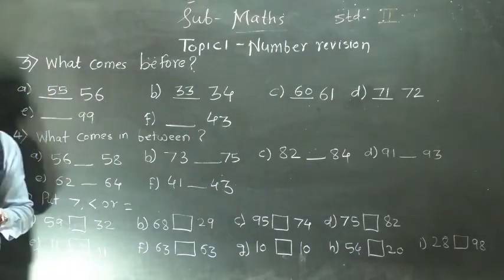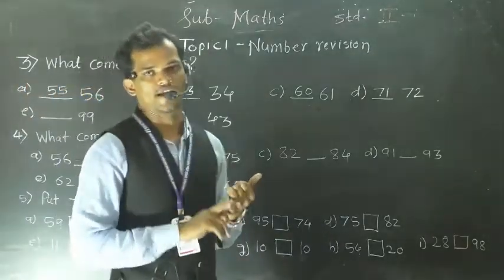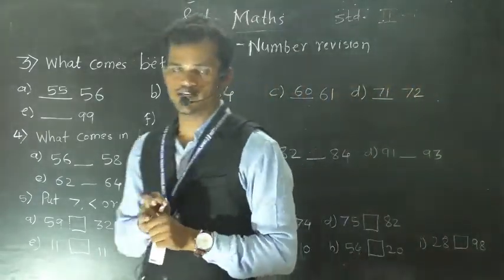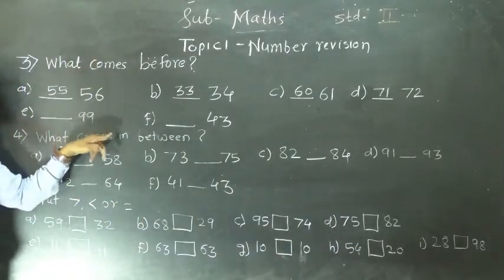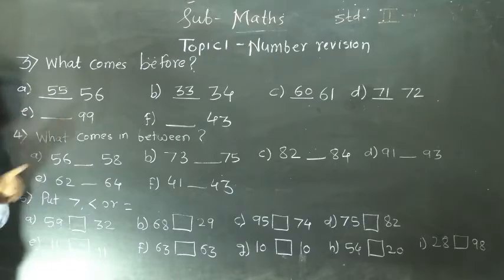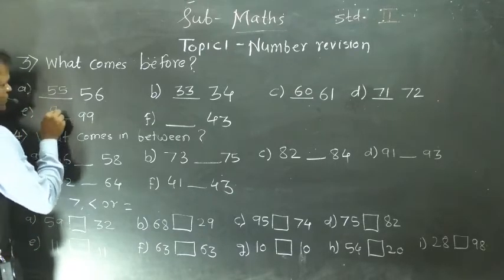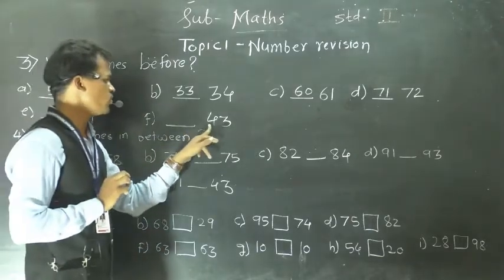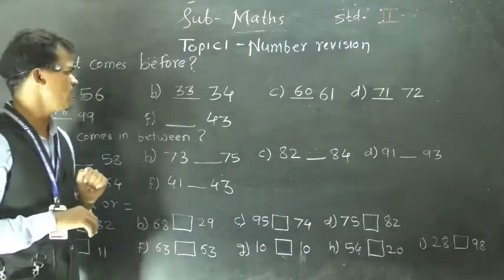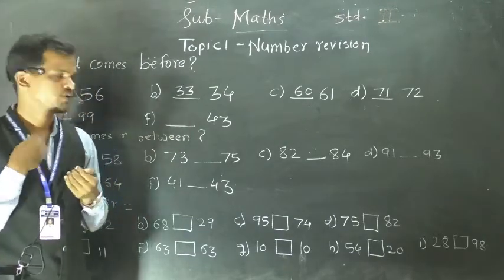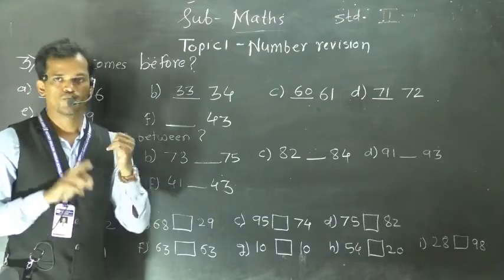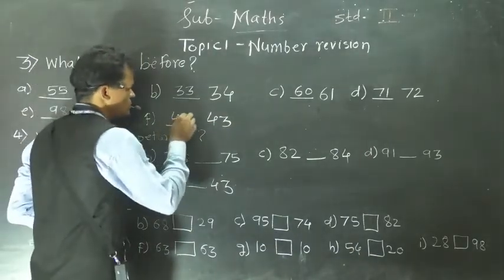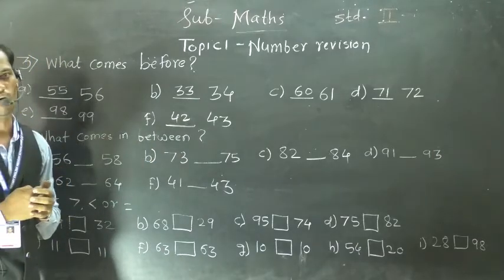Next number: 99. See the number series: 91, 92, 93, 94, 95, 96, 97, 98, 99. So before 99, which number comes in the number series? That is 98. So 98 is the before number of 99. Next: 43. We have to find which is the previous number of 43. See: 41, 42, 43. So before 43, 42 comes. So 42 is the before number of 43.